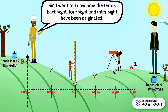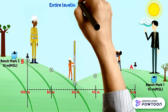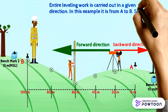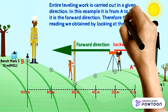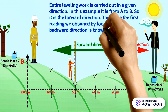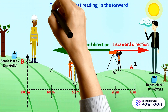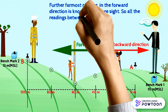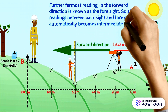How have the terms backsight, foresight, and intersight originated? The entire leveling work is carried out in a given direction — in this example, from A to B, which is the forward direction. Therefore, the first reading obtained by looking in the backward direction is known as the backsight. The last reading in the forward direction is known as the foresight. All the readings between backsight and foresight automatically become intermediate sights.